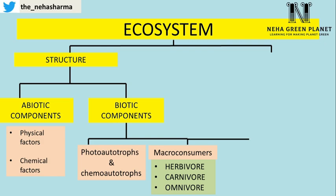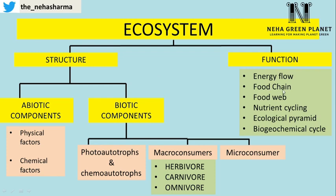The second category of biotic components is macro consumers, which are either plant eaters or flesh eaters. Micro consumers cannot synthesize food on their own. The first category under this is herbivores, which are dependent on plants for their nutritional requirement. Carnivores are dependent on animals — they are flesh eaters. Omnivores can feed on everything; for example, humans are omnivores. The next category in biotic components is micro consumers, which are basically decomposers or detritivores that feed on dead organisms.